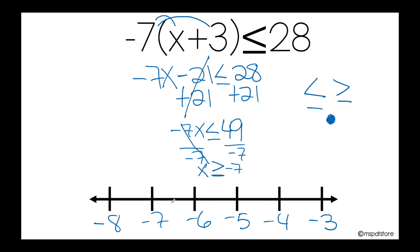So I'm going to use a closed circle at negative 7. Now I need to analyze what my solution is telling me — it's basically saying my variable could be any number greater than or equal to negative 7.